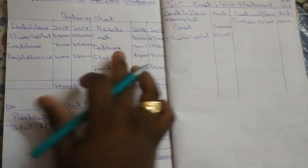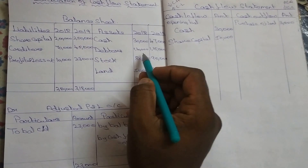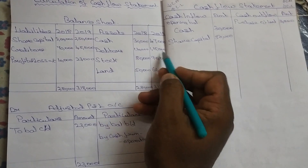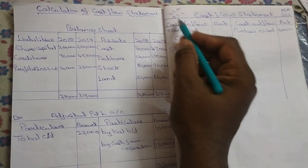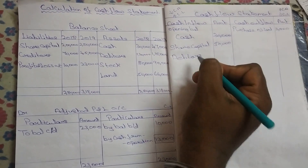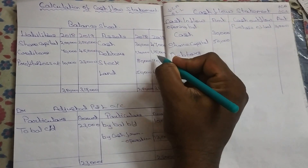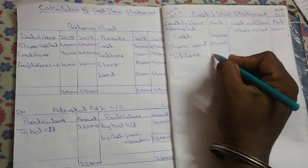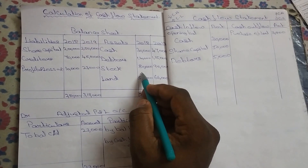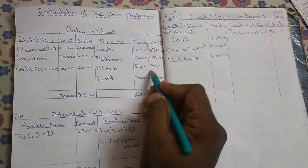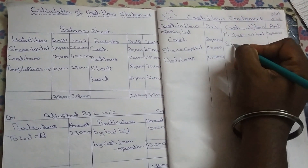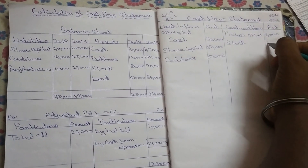Current asset is debtors. Now current asset debtors: 1,20,000 versus 1,15,000 — so current asset is decreased. Debtors: 1,20,000 minus 1,15,000 is equal to 5,000 decrease. Stock: 80,000 versus 90,000, so stock has increased by 10,000.